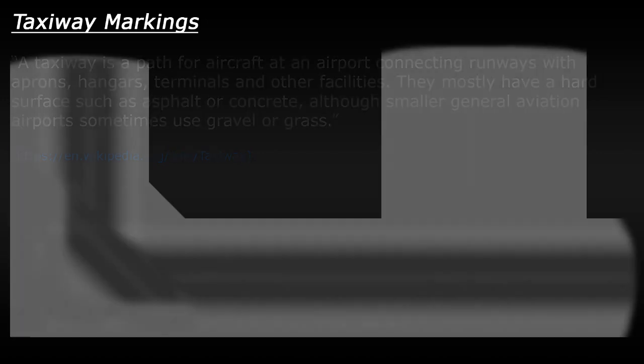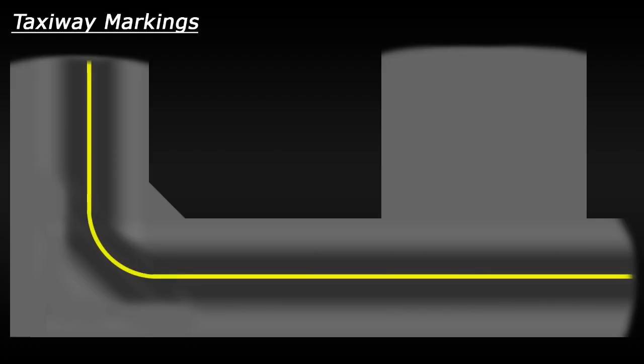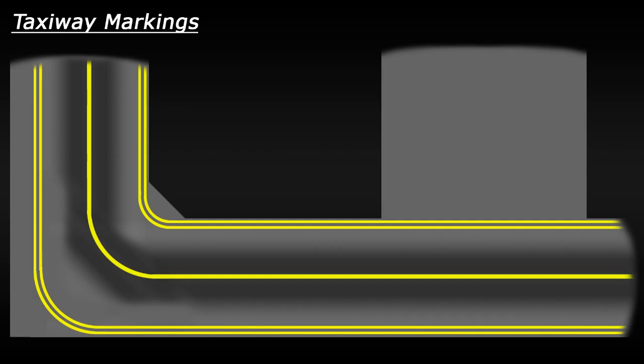So let's start with some basic taxiway markings. You'll notice that all of the markings will usually be painted yellow. First you have the taxiway centreline, which is a single solid yellow line, which simply marks the centre of the taxiway. Next you have the taxiway edge lines. These define the edges of the taxiway and they are solid, double yellow lines.